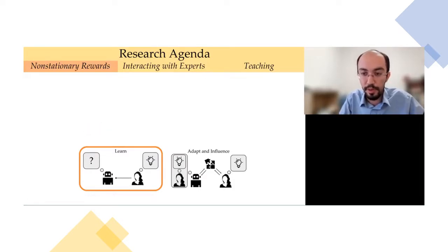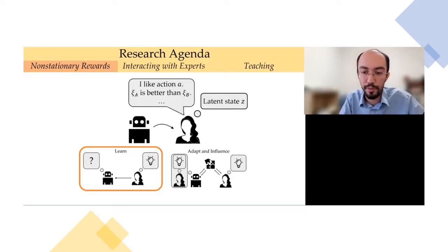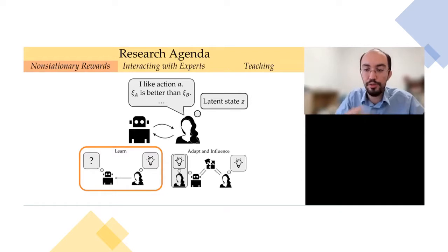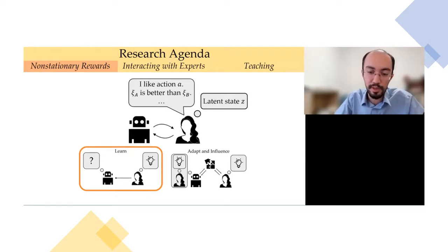One idea is as follows: we have an agent with some latent state C, and based on this latent state, the agent leaks information to our robot via demonstrations or comparisons. Our robot interactively queries the agent, but this reaction may cause a change in the agent's latent state, affecting their objectives. We can model this latent state C and its dynamics by formulating the problem as a partially observable Markov decision process or by employing hidden Markov models. However, scalability is still an open question in such a formalism, and I'm excited to explore developing more efficient and scalable approaches.